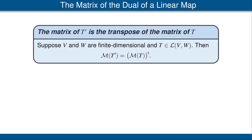Now we can discuss the relationship between the matrix of T and the matrix of the dual map of T. Suppose V and W are finite dimensional vector spaces and T is a linear map from V to W. This theorem states that the matrix of T prime is equal to the transpose of the matrix of T. Some explanation is needed here: the matrix of a linear map is computed with respect to some bases. What's intended is that we have a basis of V and a basis of W, and the matrix of T on the right side is computed with respect to those bases. The basis of W leads to the dual basis for W prime, and the basis of V leads to the dual basis for V prime. Thus on the left side, when we compute the matrix of T prime, we must use those dual bases.